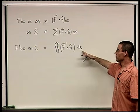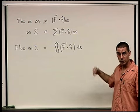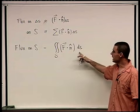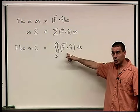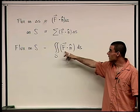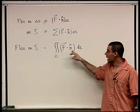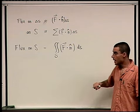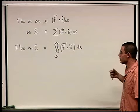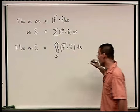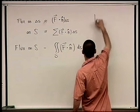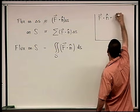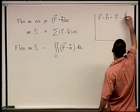So the flux on S — the rate of flow per unit area over the entire surface — is given by the double integral of F dot N dS. Looking at it, this is a surface integral of a scalar function: F is a vector field and the normal at every point is a vector, so their dot product is a scalar. At every point we get a scalar, so F·N̂ is a scalar function.